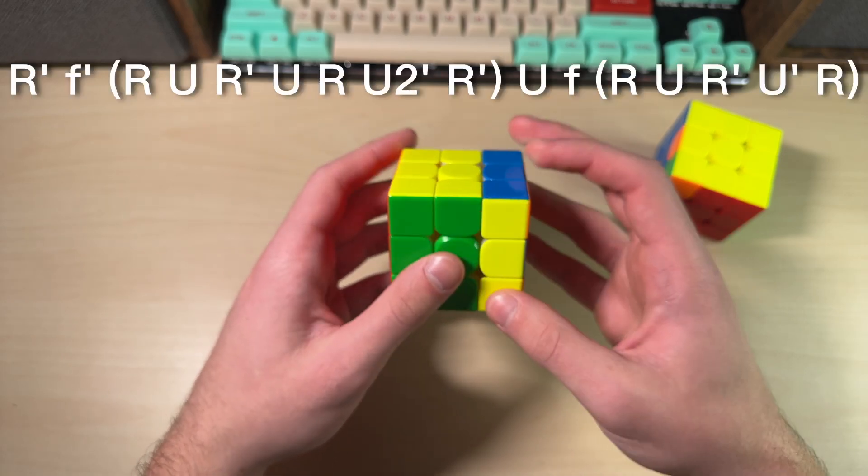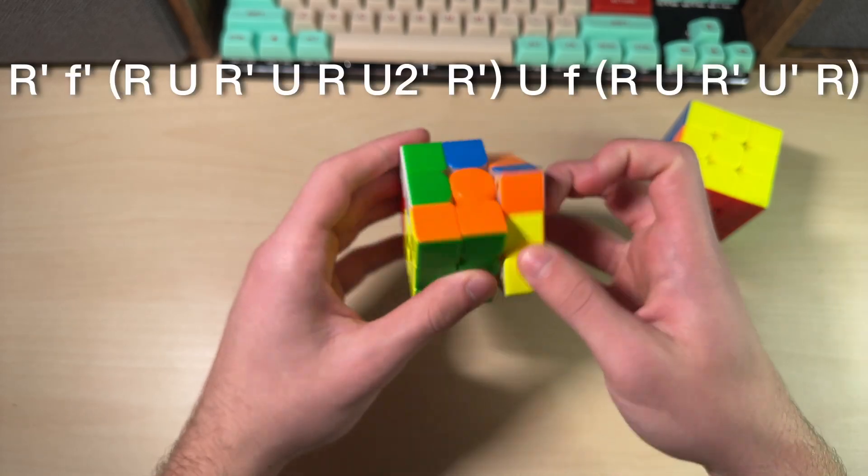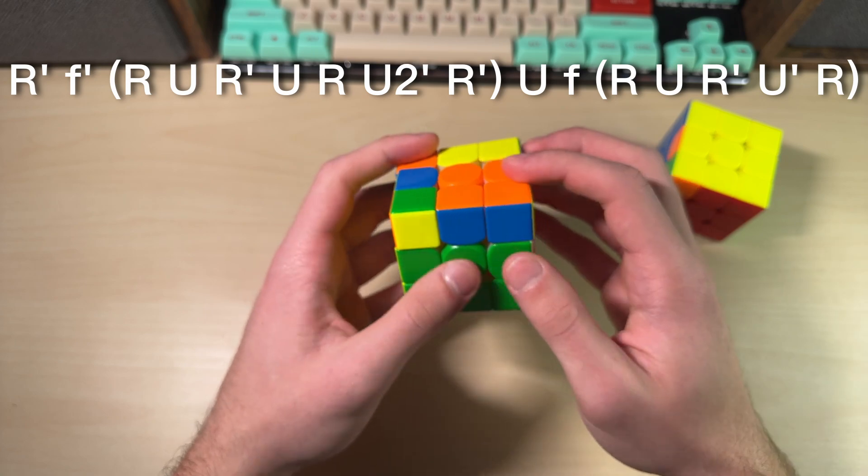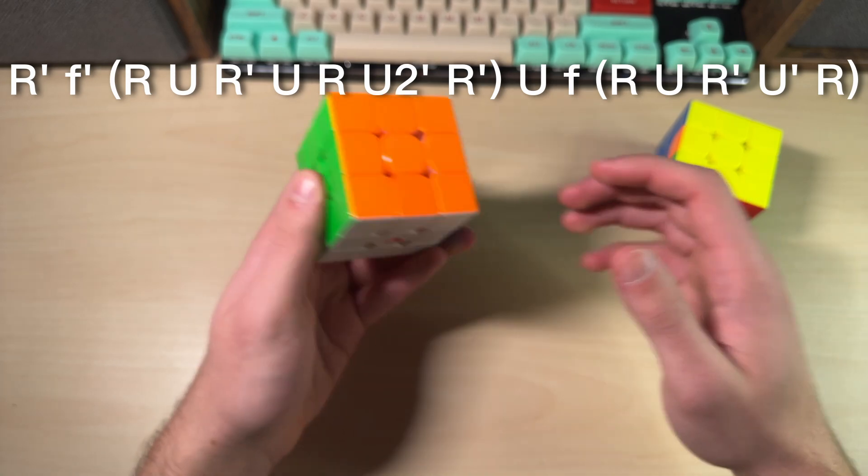Start in the normal orientation. You go R', wide F', SUNE, U, F, R, and then insert this pair into the back.